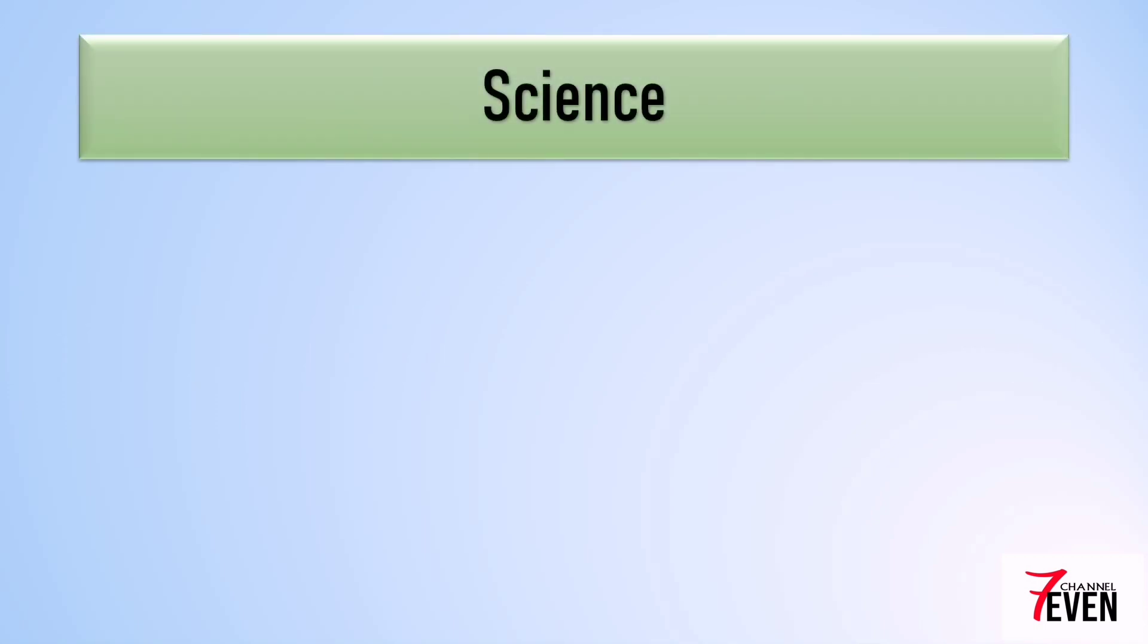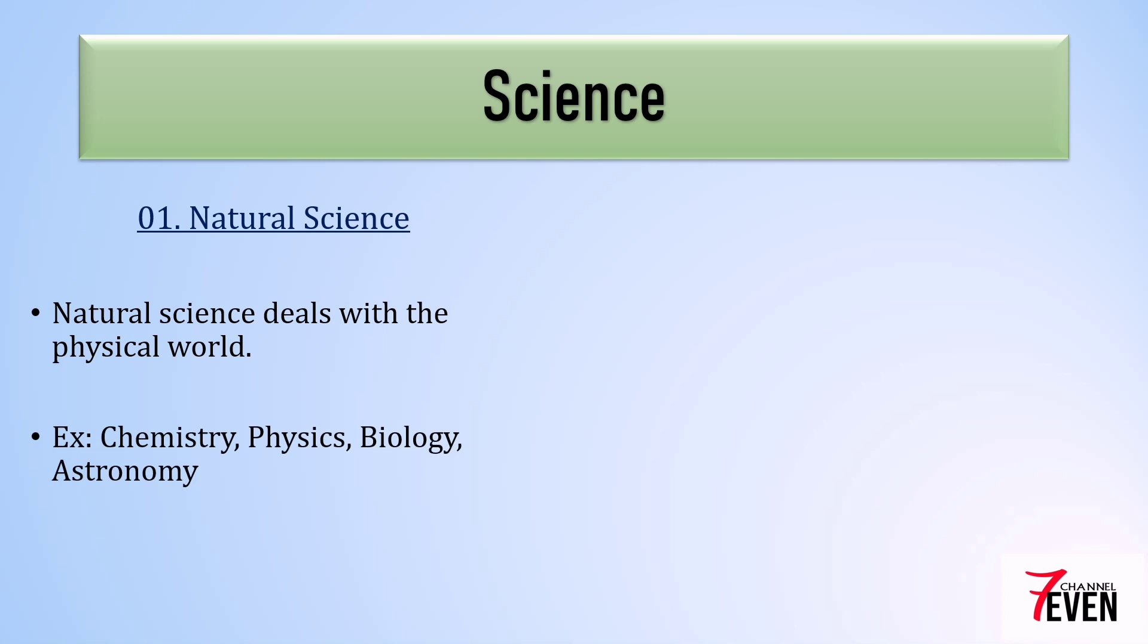There are two kinds of science. One is natural science. Natural science deals with the physical world. For example, chemistry, physics, biology, mathematics, astronomy, and so on. Natural science always uses the scientific method as its own methodology.